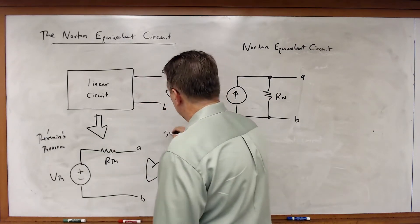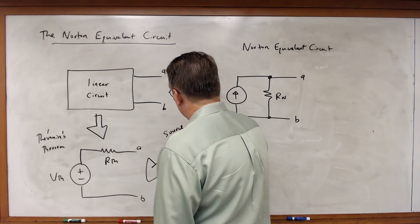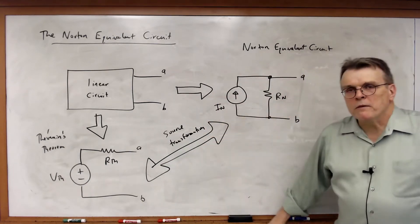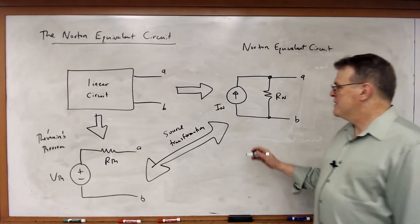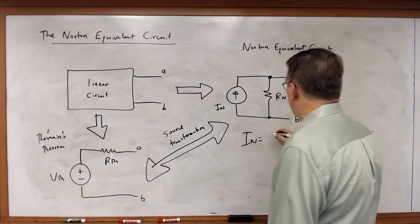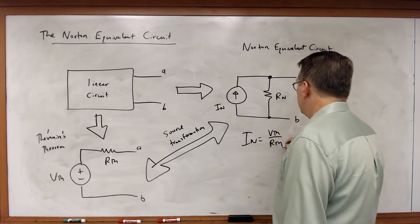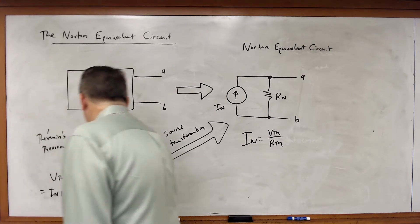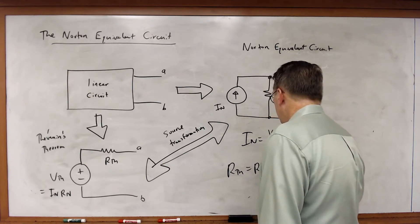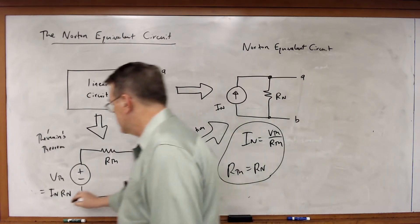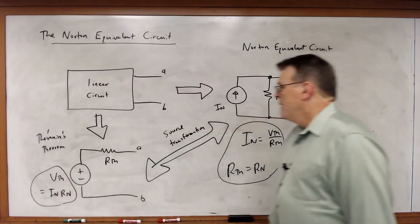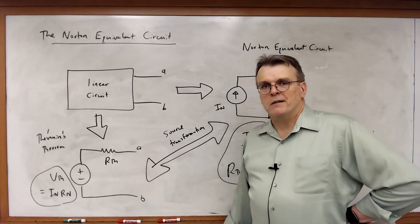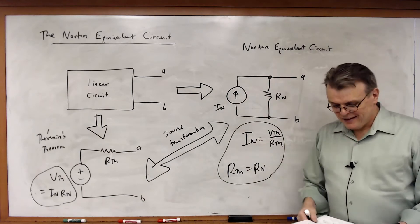Clearly source transformation. The Norton equivalent circuit is nothing more than the source transformation of the Thevenin equivalent circuit. In this case, I_N must be equal to V_th over R_th, V_th is equal to I_N times R_N, and clearly R_th and R_N must be the same resistance. So when you work a problem to find the Norton equivalent circuit, all you really have to do is find the Thevenin equivalent circuit and then do the source transformation. That's it.